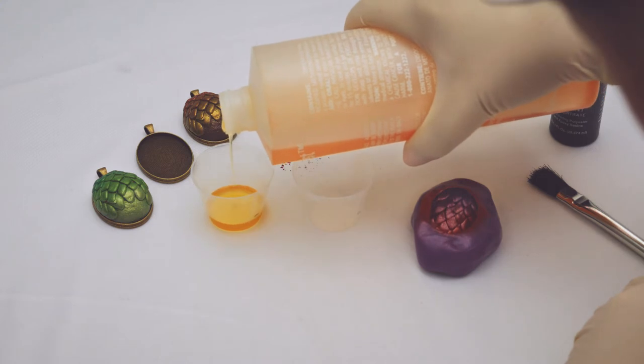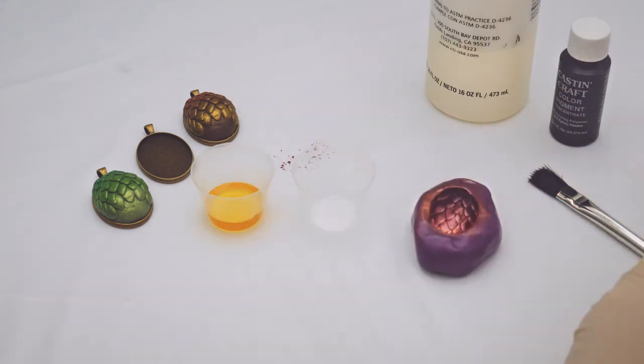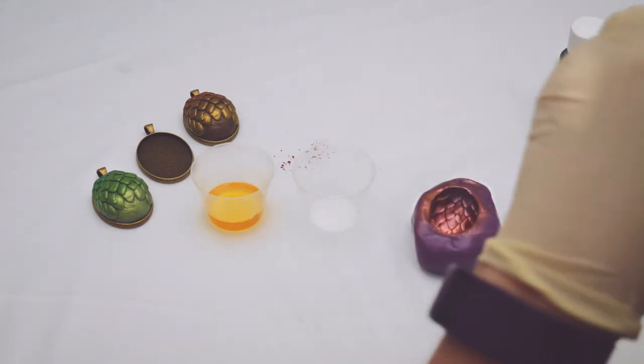Measure out seven and a half mils or quarter ounce of each part of Fastcast into two separate cups.